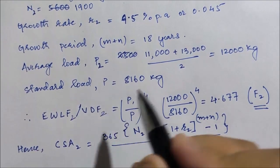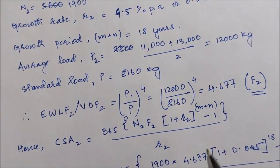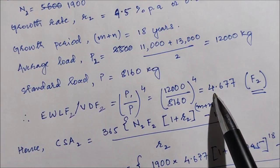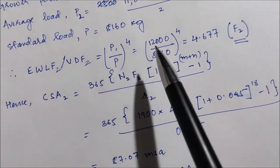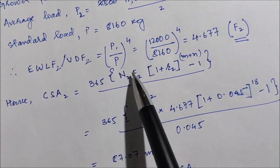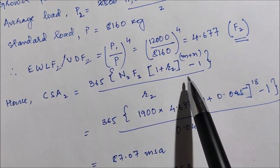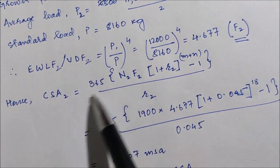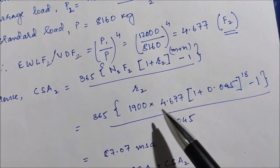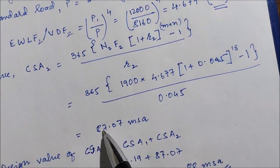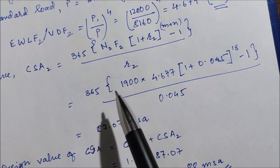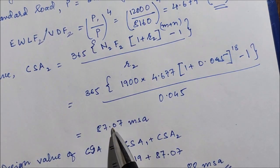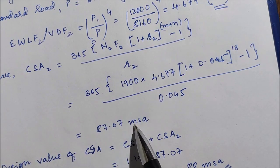VDF2 is given as 4.677. Substituting all the values — N2, F2, R2, m+n, and R2 — into the CSA formula, we get the value of CSA2, the cumulative standard axle value for vehicle class 2, as 87.07 million standard axles.